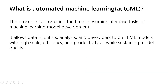What is automated machine learning? Automated machine learning, also referred to as AutoML, is the process of automating the time-consuming iterative tasks of machine learning model development. It allows data scientists, analysts, and developers to build ML models with high-scale efficiency and productivity, all while sustaining model quality.